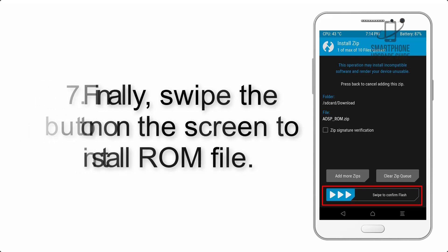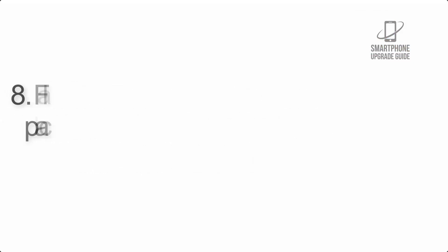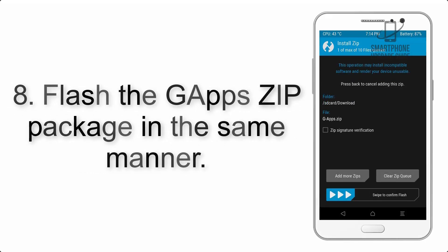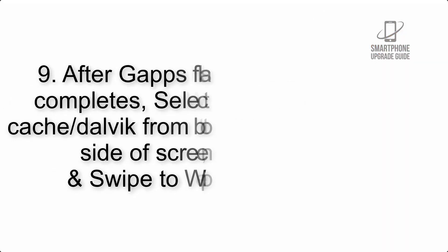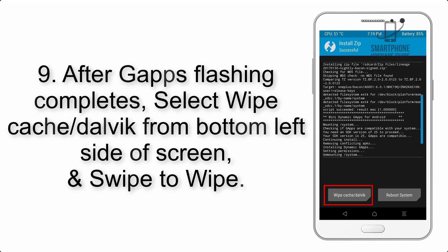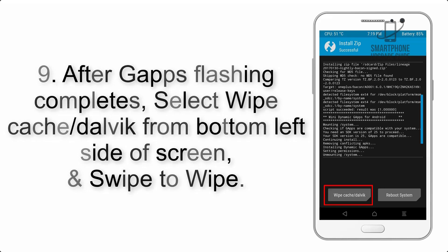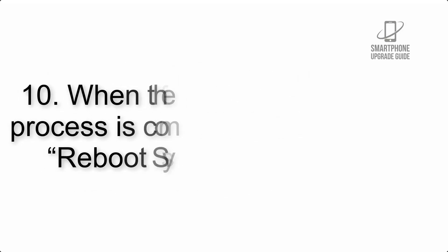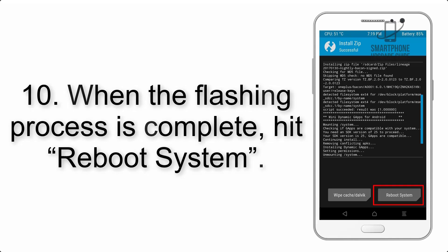Step 7: Swipe the button on the screen to install the ROM file. Step 8: Flash the GApps zip package in the same manner. Step 9: After GApps flashing completes, select Wipe Cache and Dalvik from the bottom left side of the screen and swipe to wipe.